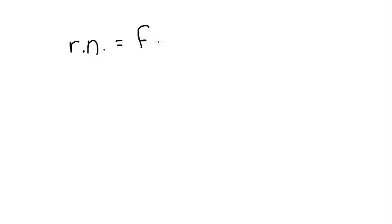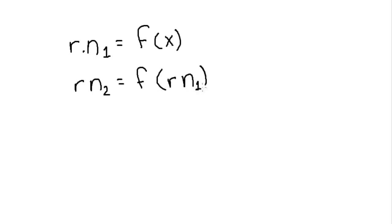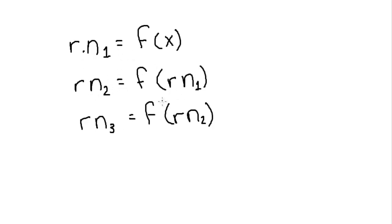Basically what the computer does is: the random number (rn) is equal to the result of some function f(x). The first random number is rn1 = f(x). The second random number uses rn1 as input instead of x, so rn2 = f(rn1). Then rn3 = f(rn2), and so on. This function — which I won't write down — will produce that uniform distribution when used in this chained way.